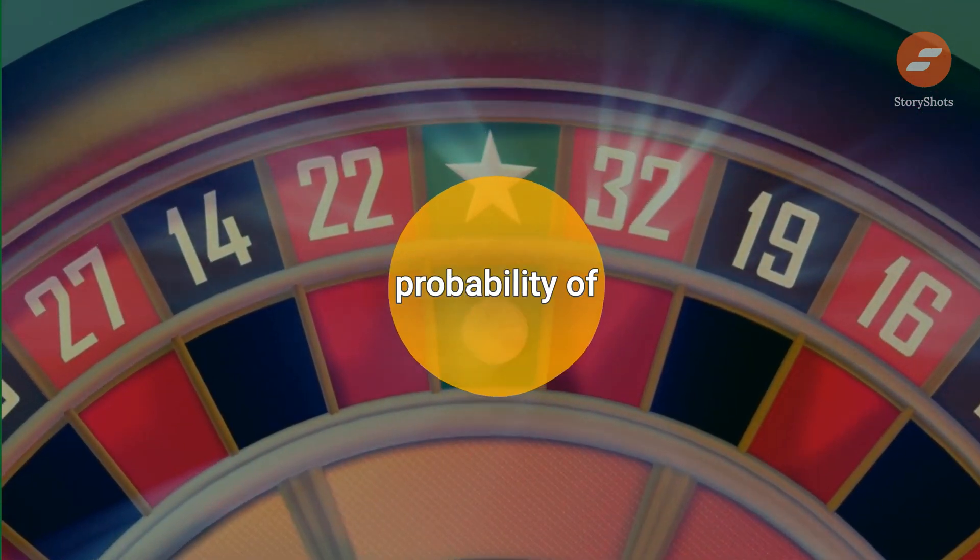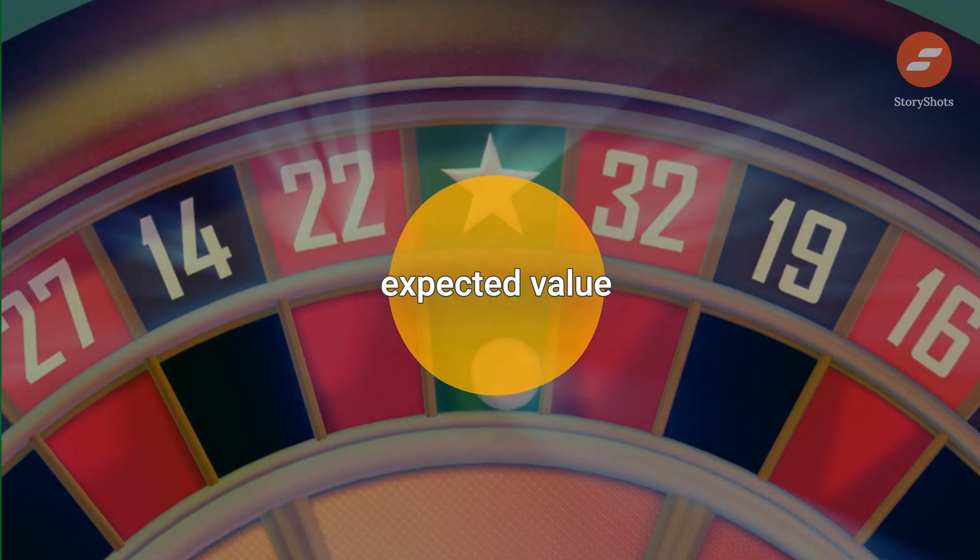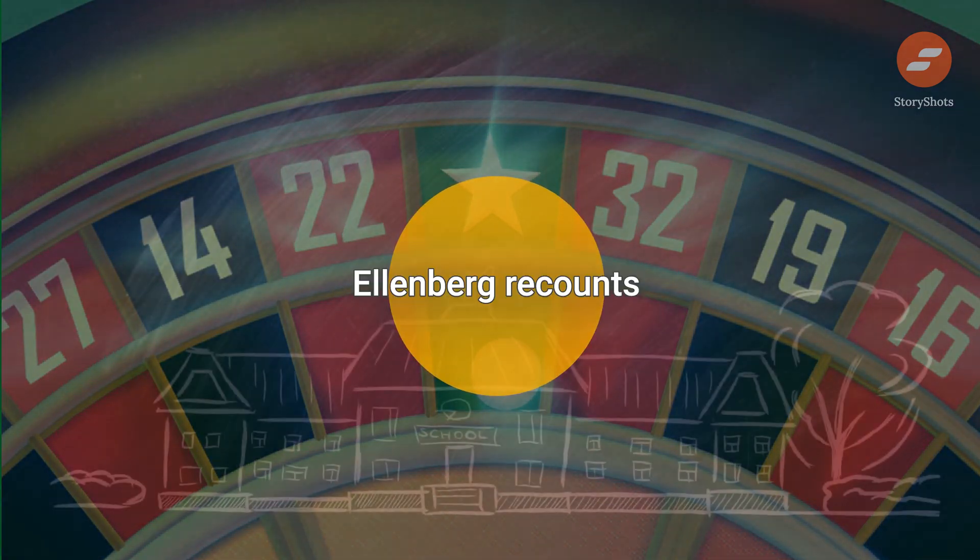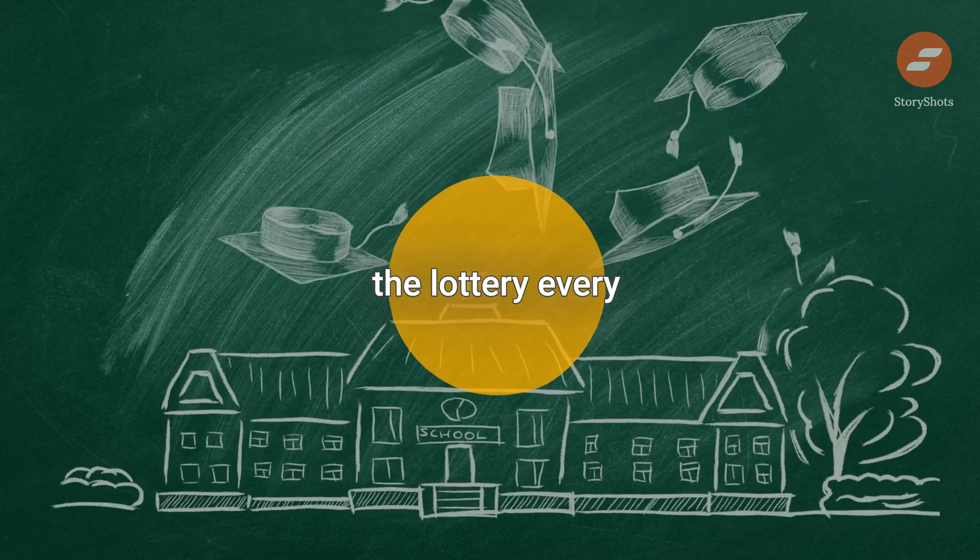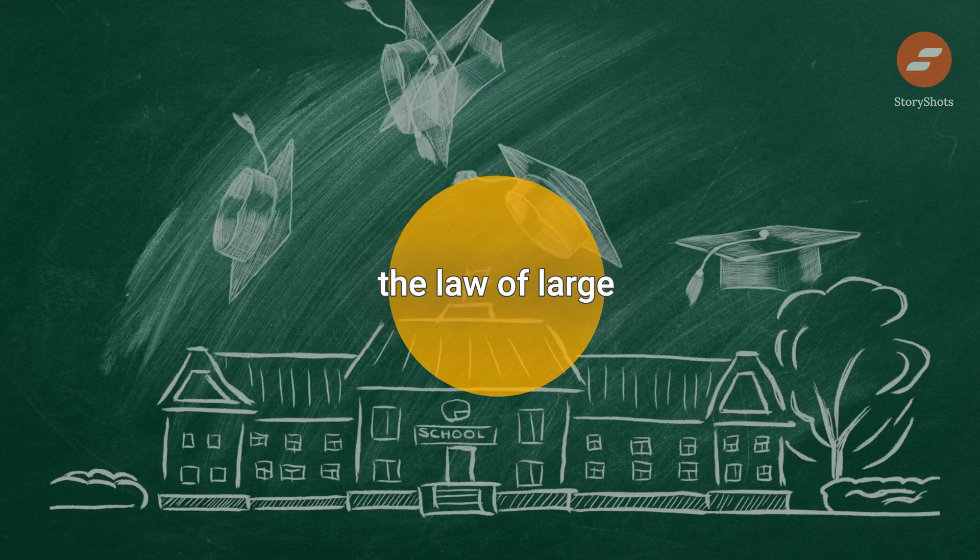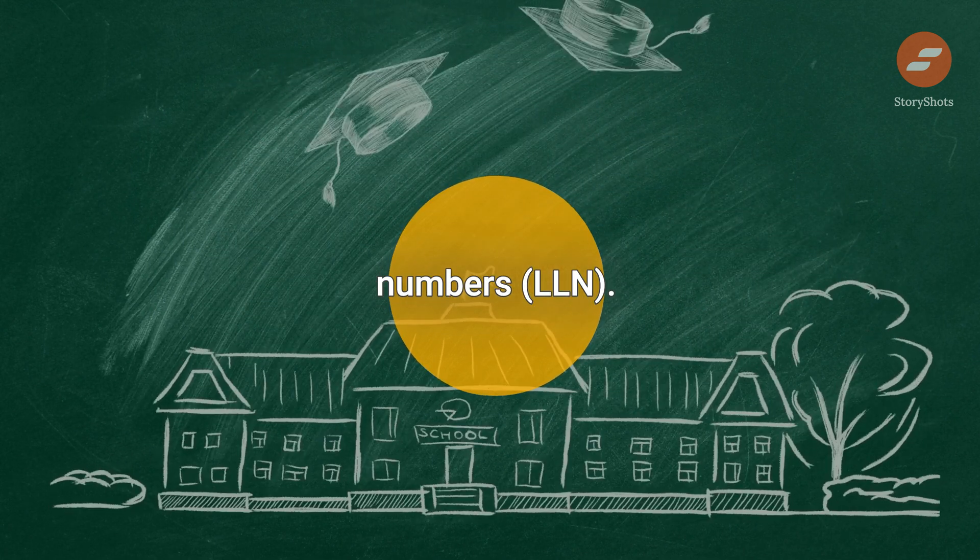Consider the probability of winning the lottery and the expected value of lottery tickets. Ellenberg recounts the story of how MIT students managed to win the lottery every time in their town and revisits the law of large numbers, LLN.